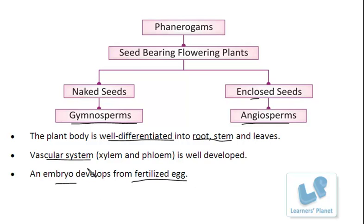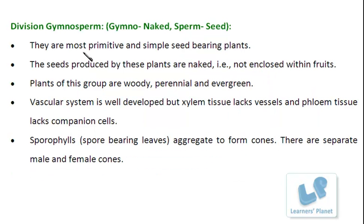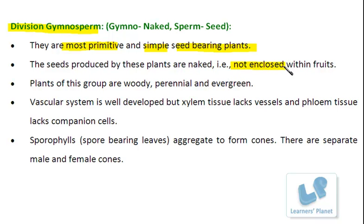Let me explain the specific features of Gymnosperms and Angiosperms. Plants belonging to Gymnosperms are said to be the most primitive — this is the first group able to produce seeds. Their seeds are not enclosed inside any structure like a fruit; rather, they are present as a naked structure. These plants are generally woody, perennial — meaning they can grow for more than a single growth season — and evergreen, meaning they remain green in all seasons.